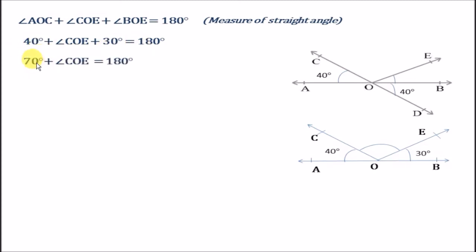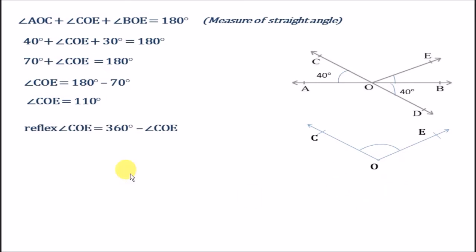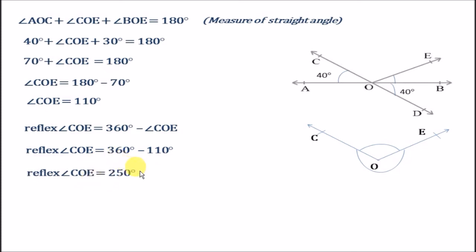40 plus 30 gives us 70, so 70 degrees plus angle COE equals 180 degrees. Taking 70 degrees to the right, angle COE equals 180 degrees minus 70 degrees, which gives us 110 degrees. Now, the reflex of angle COE means the greater part of angle COE, and we have found reflex of angle COE as well.